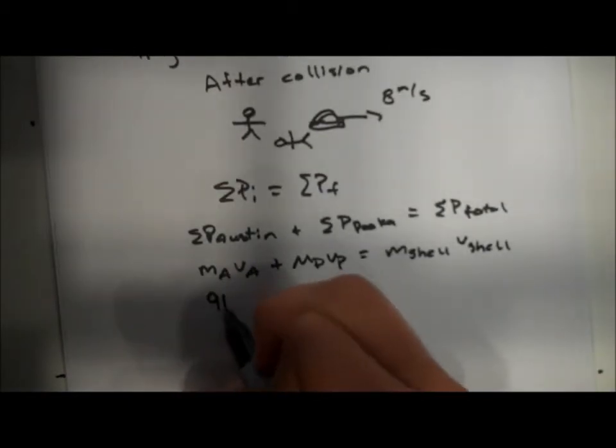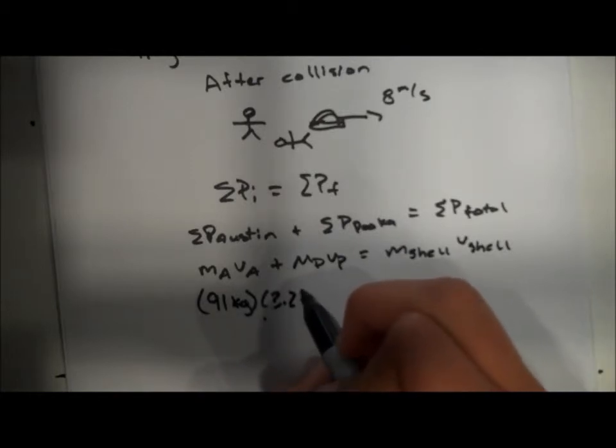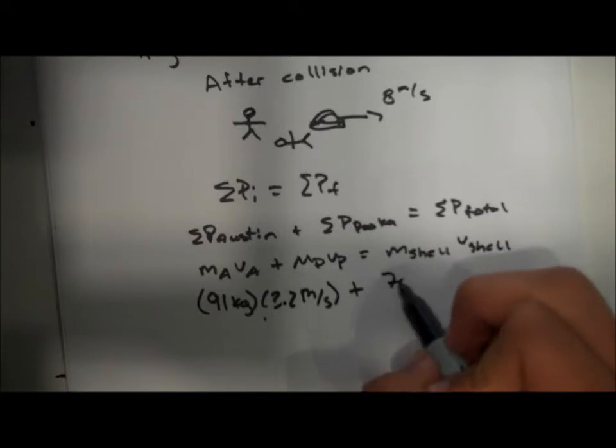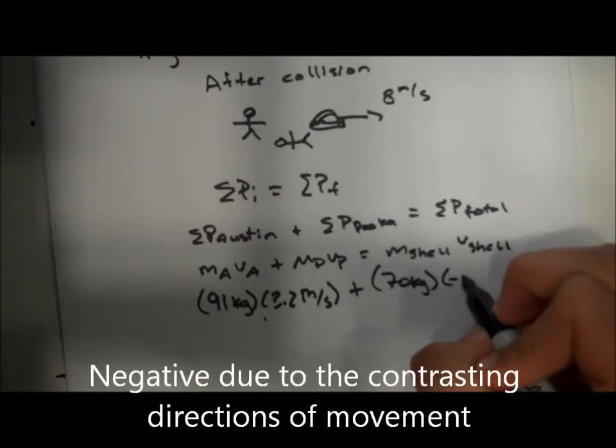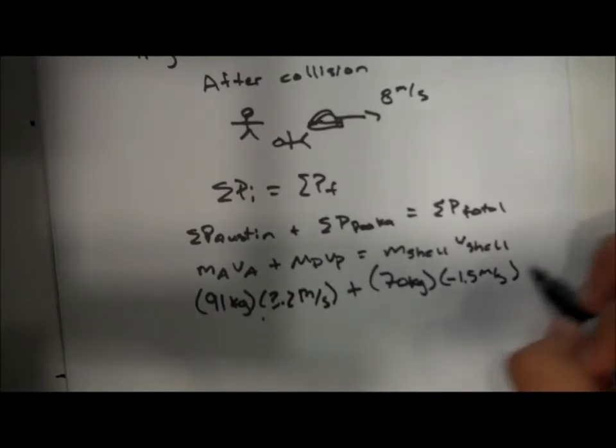Now plugging in the values, the mass of Austin is 91 kilograms. He's moving at 3.2 meters per second, and then the puka which is 70 kilograms moving at, make sure you get this, negative 1.5 meters per second because he's moving in the opposite direction as Austin.